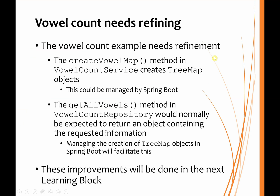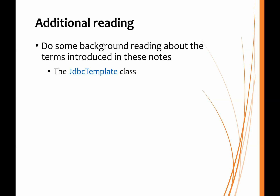We've refined the repository, but the application still needs some refining. For example, the createVowelMap method in the service class creates tree map objects, but we could do with this being managed by Spring Boot. The getAllVowels method in the repository would normally be expected to return an object containing the requested information. Those improvements we'll look at in the next learning block. We've introduced the JDBC Template class, and you might well want to do some additional reading — the internet is a fantastic resource for this kind of thing.